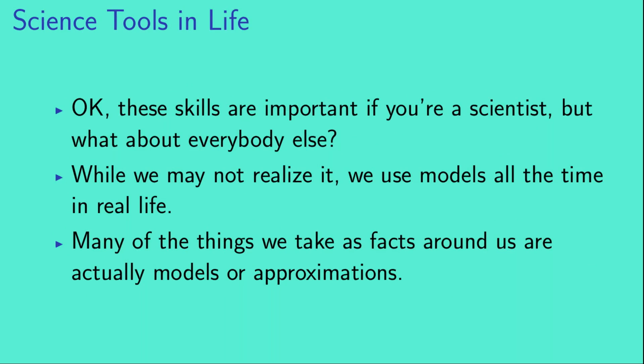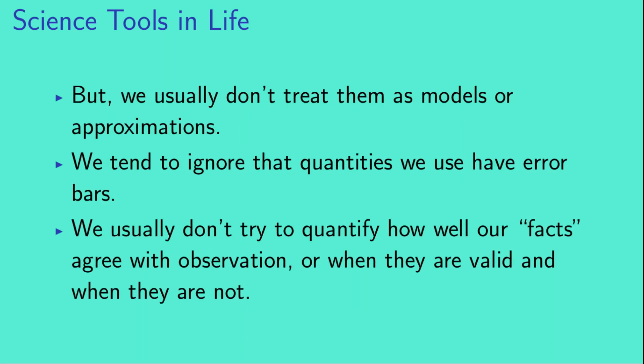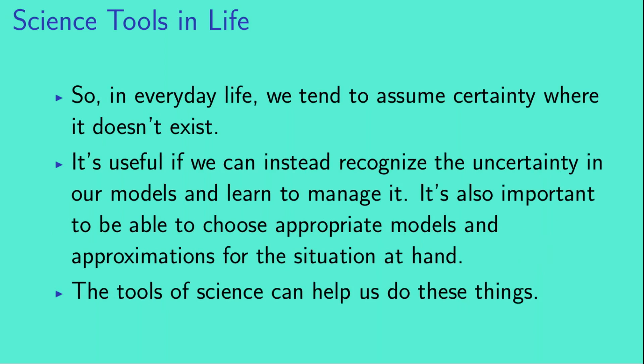These skills are important if you're a scientist, but what about everybody else? Well, while we might not realize it, we actually use models all the time in real life. Many of the things that we take as facts around us are actually models or approximations, but we don't usually treat them as such. We tend to ignore that the quantities we use have error bars, and we usually don't try to quantify how well our facts agree with observation or when they're valid and when they're not. In everyday life, we tend to assume certainty where it doesn't actually exist. It's useful if we can instead recognize the uncertainty in our models and learn to manage it. It's also important to be able to choose appropriate models and approximations for whatever situation is at hand, and the tools of science can help us do these things.